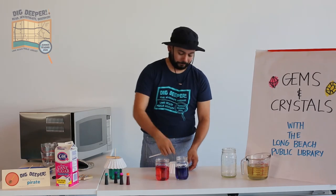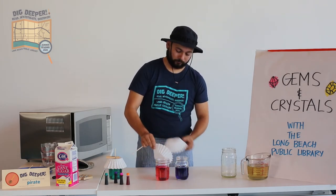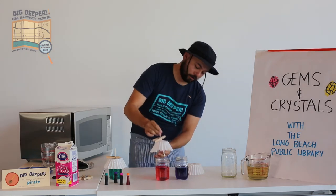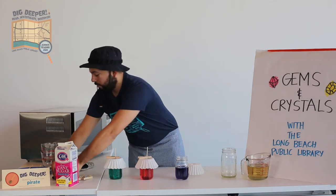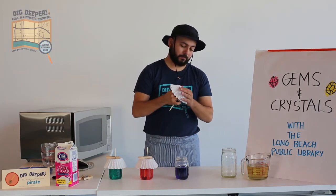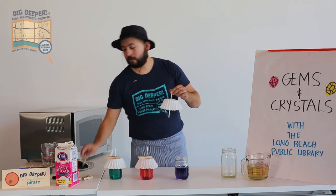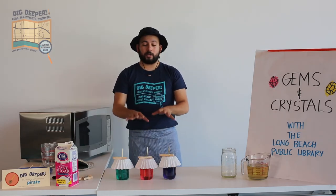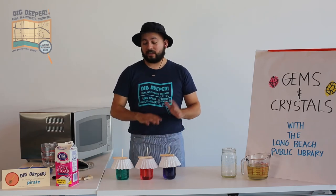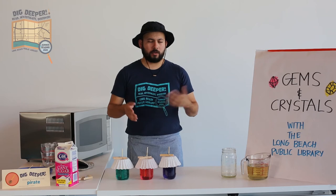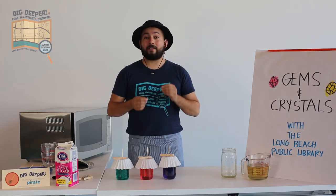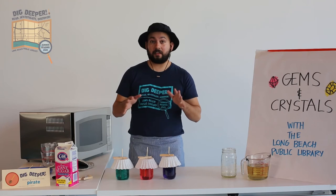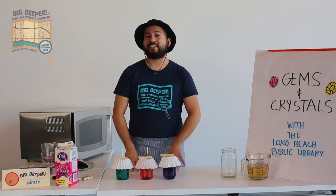Set up the remaining two jars the same way — a stick through the coffee filter, a clothespin on top, and adjust so the stick doesn't touch the bottom. Now put them all aside somewhere that doesn't get a lot of traffic or noise, and let them sit for about a week. You can come and look at them every day to see if more crystals are forming. At the end of the week, pull these out and you'll have some rock candy. I'll film another segment in a few days so you can see the finished products of these three jars.